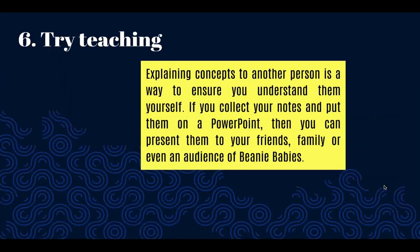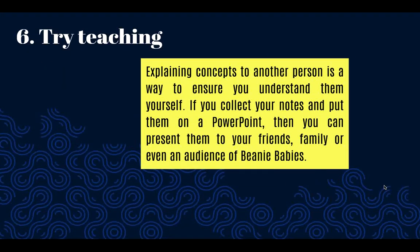Number six: try teaching. Explaining concepts to another person is a way to ensure you understand them yourself. So if you have a peer who is having a hard time understanding a concept in science — whether biology, chemistry, or physics — then you can just explain it to them. That is the best way of showing that you have a wide understanding of the concept, and it will also help you remember things that you have reviewed.